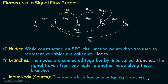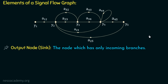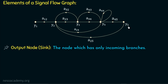Moving on to the next element: output node or sink. The node which has only incoming branches is called the output node. If we observe node Y5, it only has incoming branches — signals come into this node but do not go out. Node Y5 has two incoming branches: one from Y4 and one from Y2, but no outgoing branches. That is why Y5 is the output node. All other nodes have outgoing branches, so only Y5 is the output node.